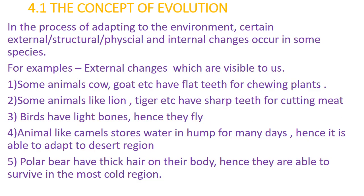In the process of adapting to the environment, certain external and internal changes occur in some species. External changes are visible to us. For example, some animals like cow and goat have flat teeth for chewing plants, while animals like lion and tiger have sharp teeth for cutting meat. Birds have light bones so they can fly. Animals like camels store water in their hump for many days, allowing them to adapt to desert regions. Polar bears have thick hair on their body, enabling them to survive in the coldest regions.